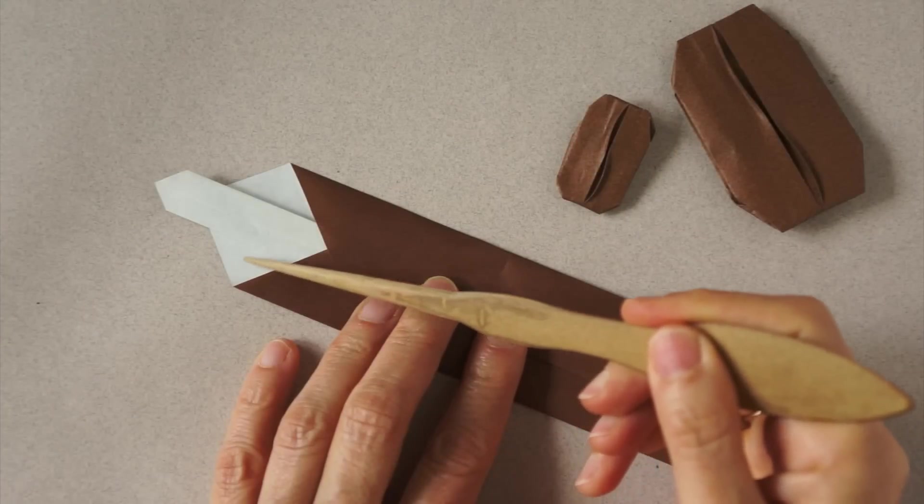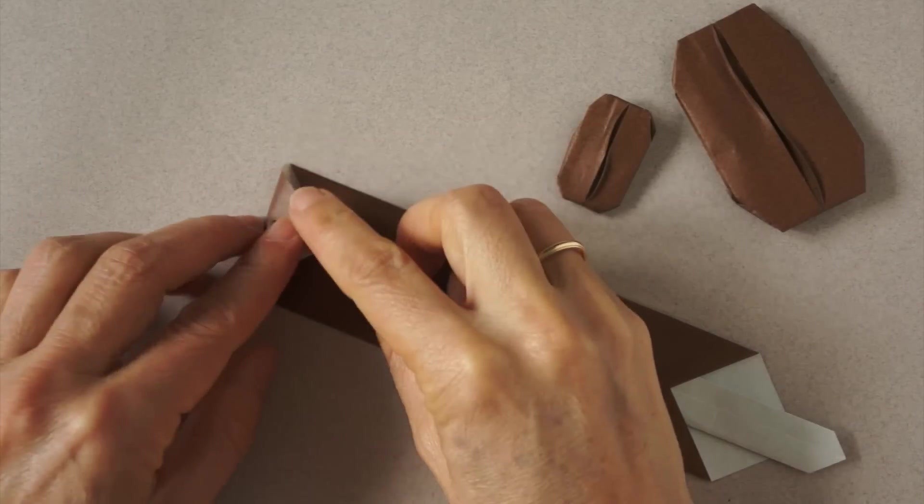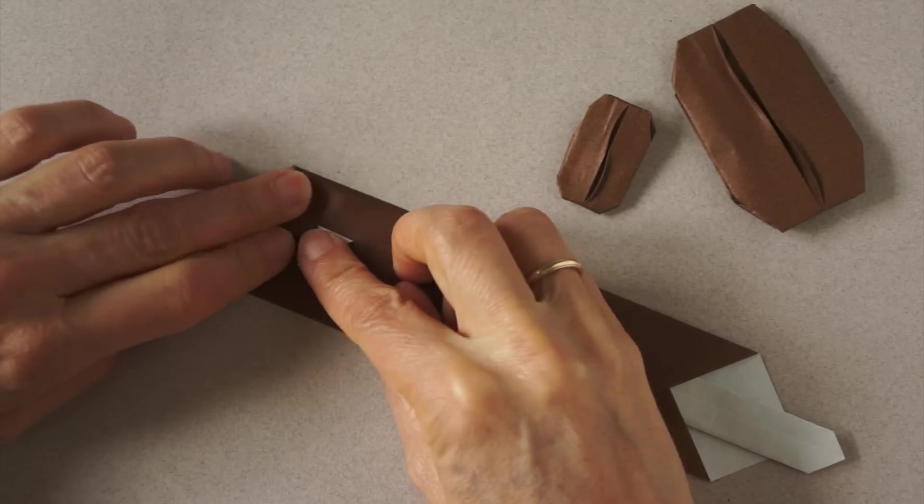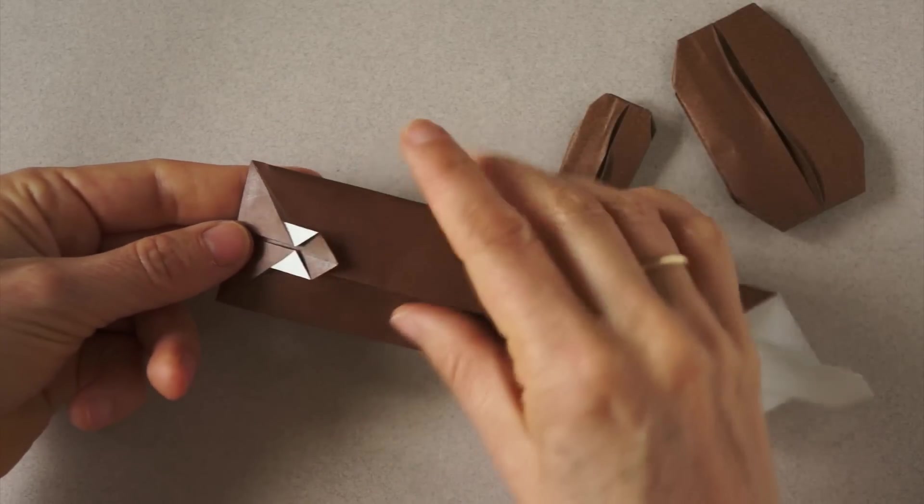We make a fold along here, connecting these two corners. And we hide this underneath.